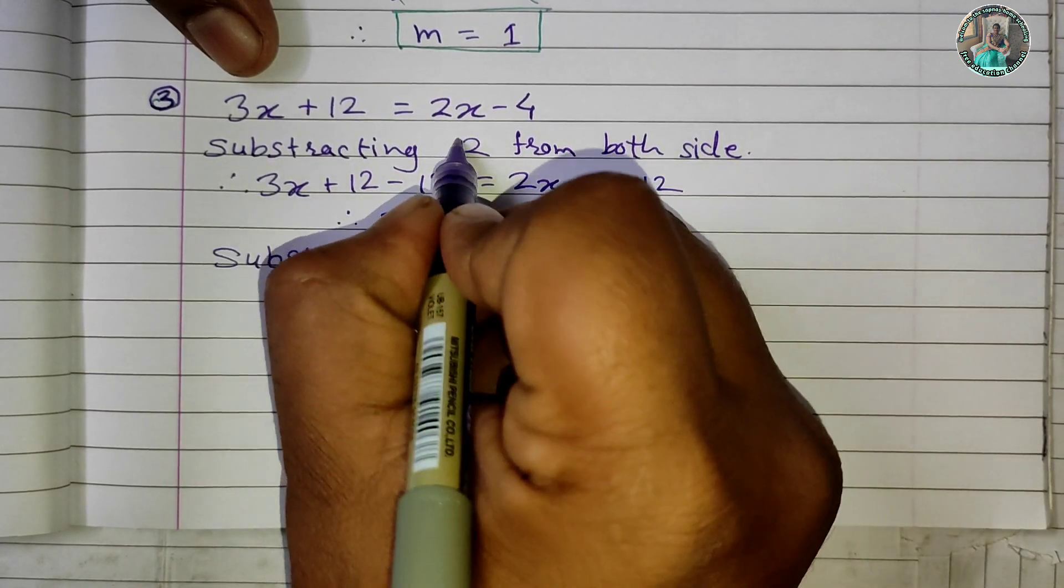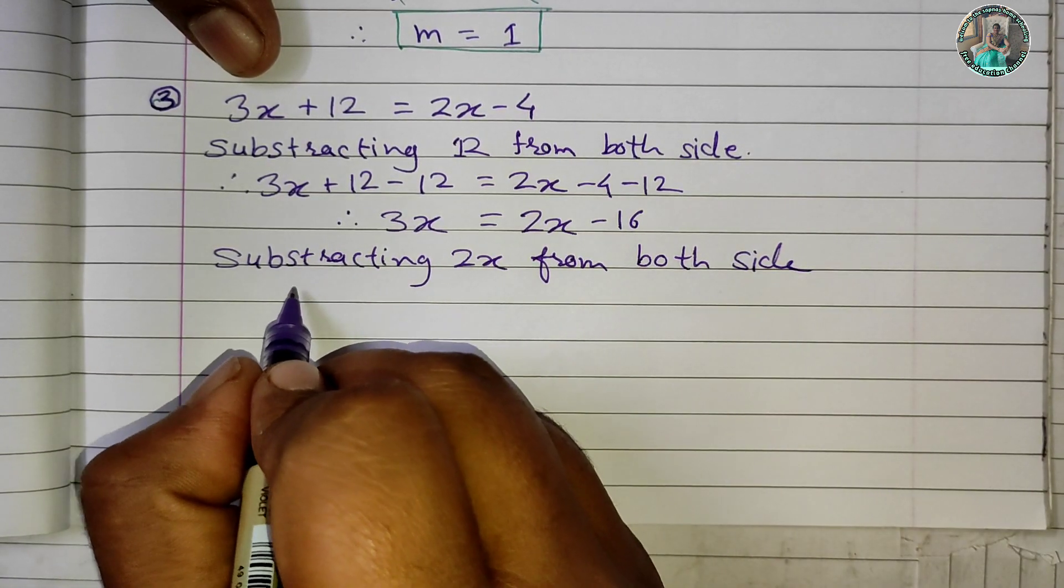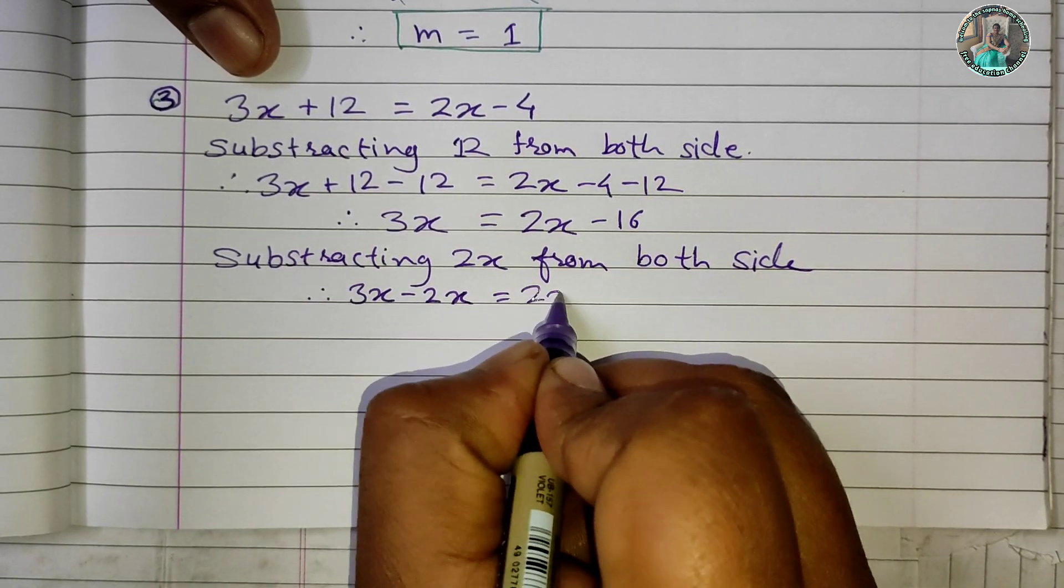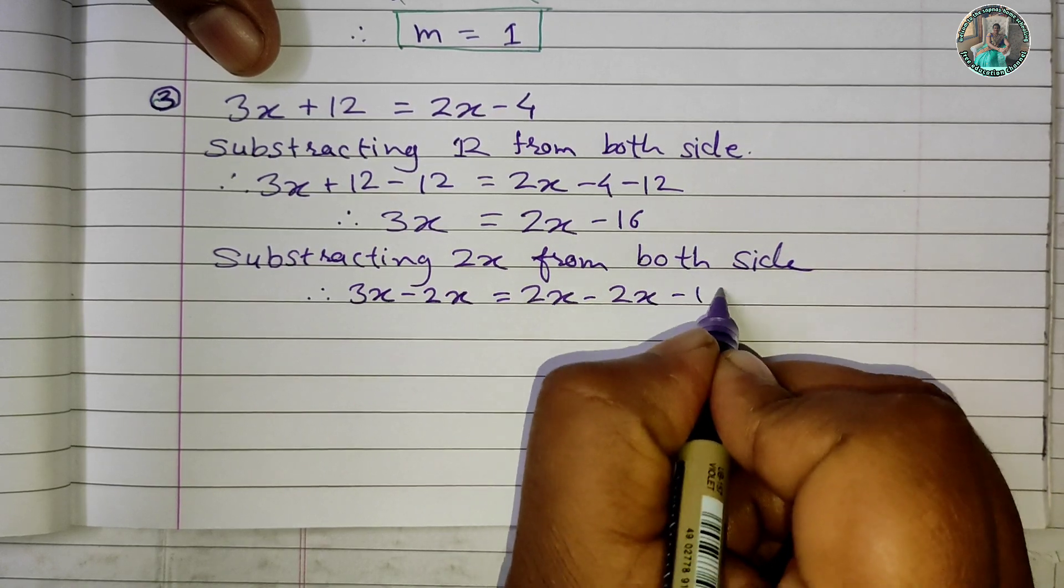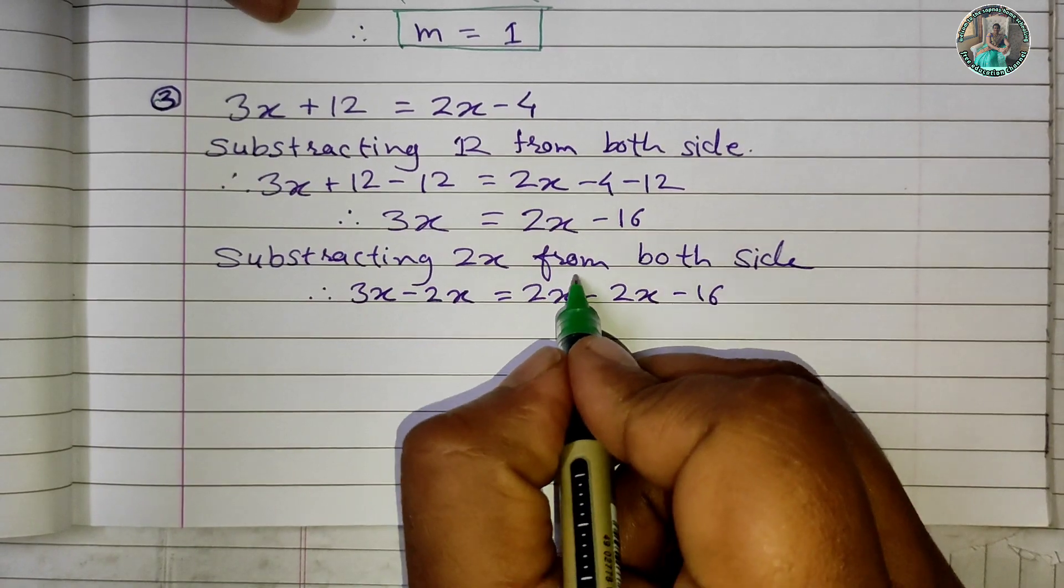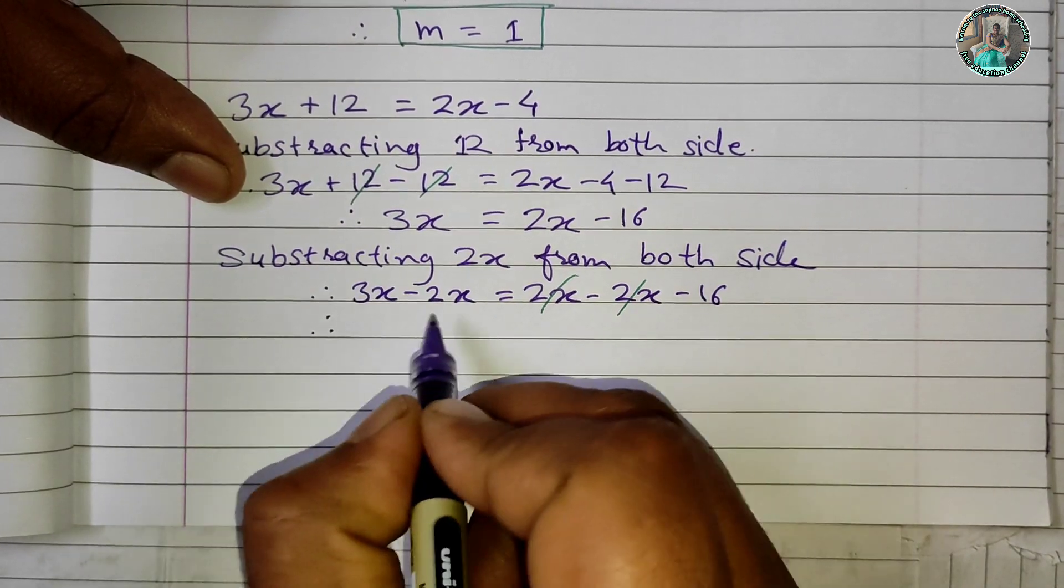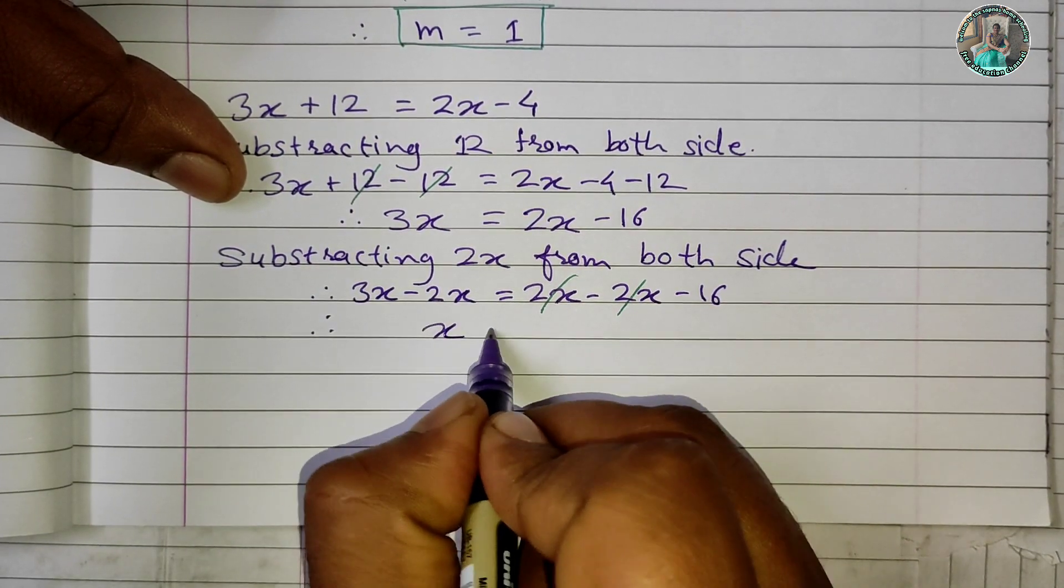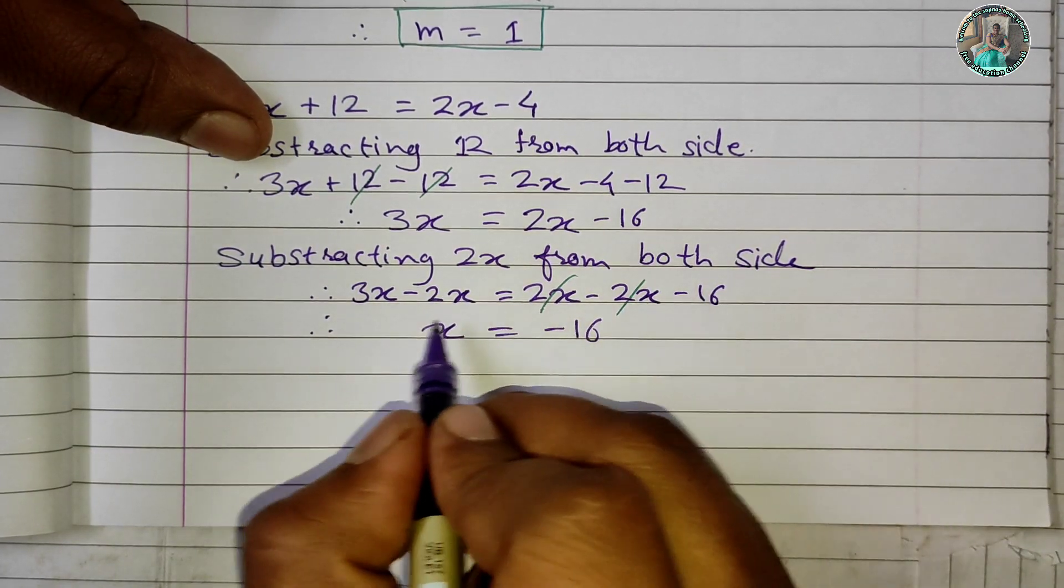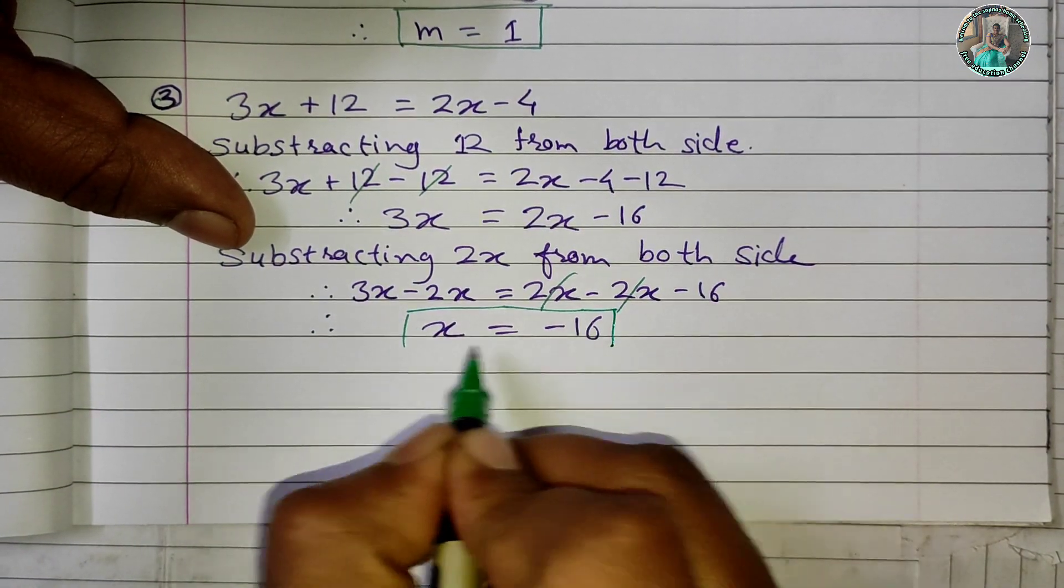Subtracting 2x from both sides: 3x - 2x = 2x - 2x - 16. The 2x cancels on the right. Therefore, 3x - 2x = x, so x = -16. This is the solution.